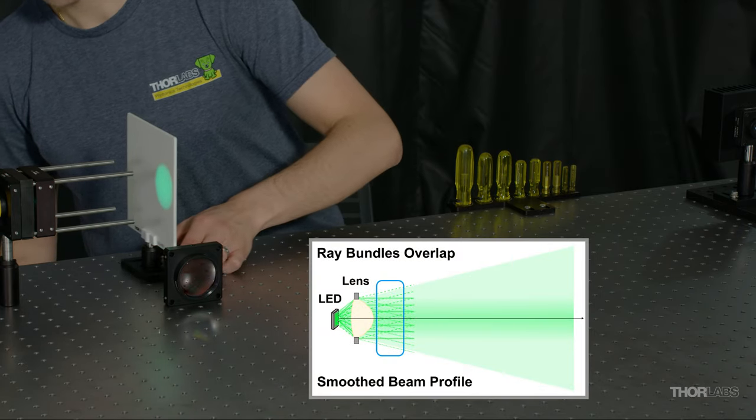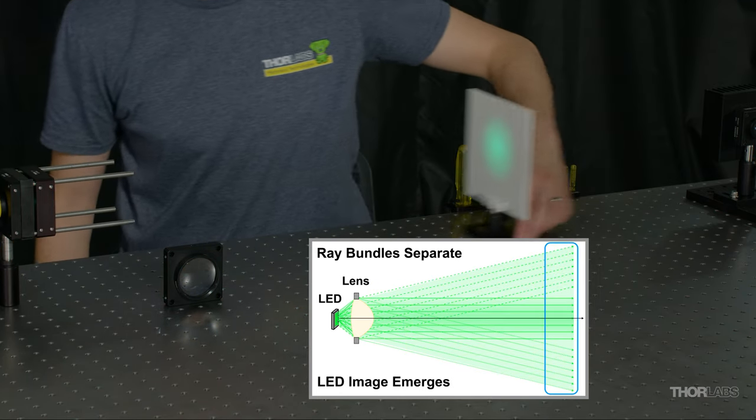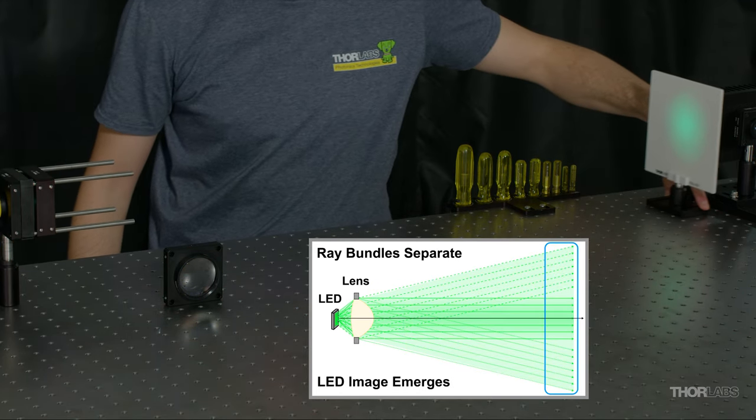The beam is collimated and shows no emitter structure close to the lens. Note that we can still see the emitter structure fairly well within relatively short distances.